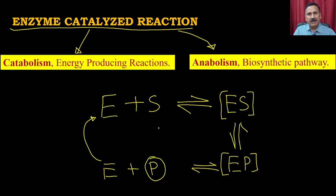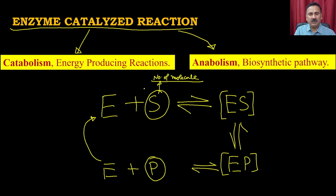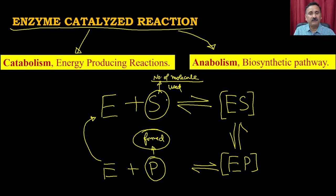How can we measure enzyme activity? The ability of an enzyme to process a number of substrate molecules is a direct measurement of activity. If you want to measure enzyme activity, you have two options: either count how many substrate molecules are being used, or count how many product molecules are being formed — measuring formation of product or depletion of substrate.